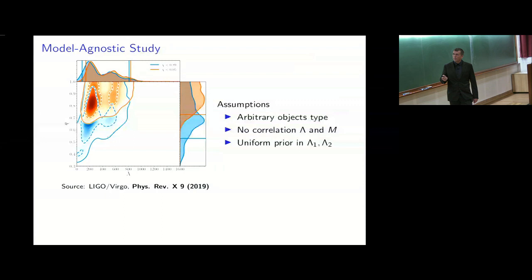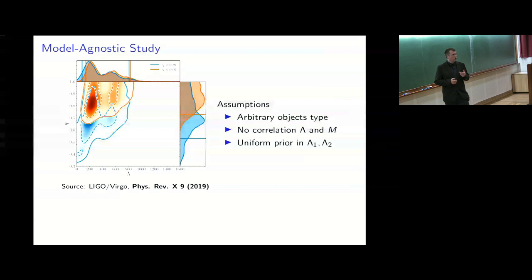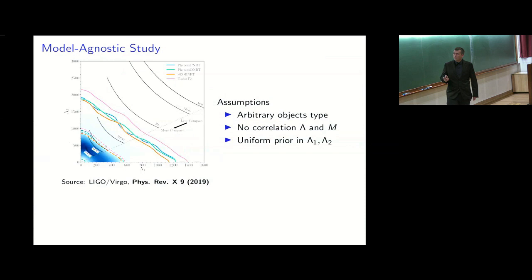Here is the same plot with an actual measurement: a posterior in mass ratio and effective tidal deformability, shown for high and low spin assumptions — the mass ratio is much more constrained under the low-spin assumption. This study made very few assumptions: objects could be black holes, neutron stars, quark stars, whatever; no assumption on tidal deformability or that it depends on mass in the same way for both objects; and a uniform prior in lambda_1 and lambda_2 was used. Plotting the individual deformabilities after marginalizing over mass ratio shows that some EOS become quite unlikely — for example, MS1 seems certainly ruled out.